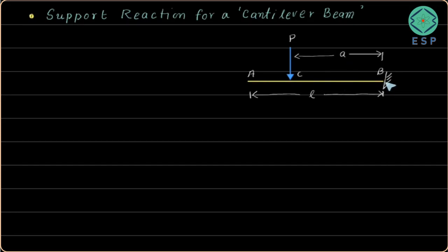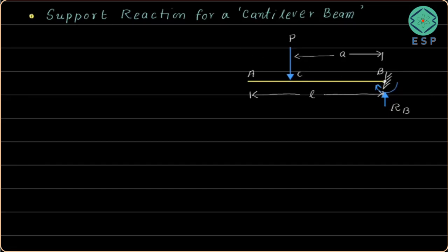We have a single support which is a fixed support at point B. At this point B we are going to get a support reaction — we can call it R at point B. For a cantilever beam we shall also be getting a moment reaction, because this cantilever beam is trying to rotate about point B. So we will be having support reaction RB and there will be a moment reaction MB acting at point B.